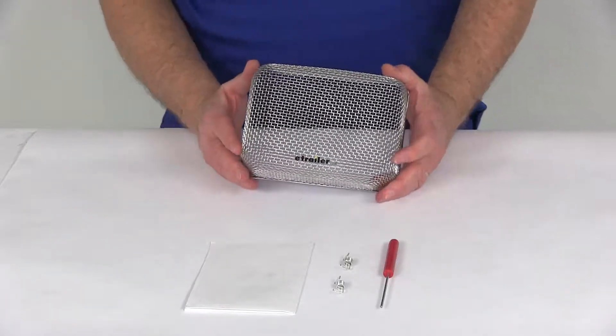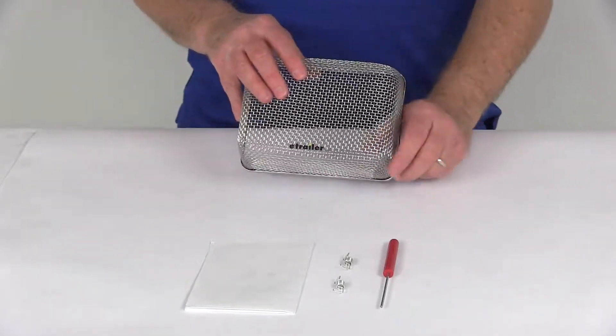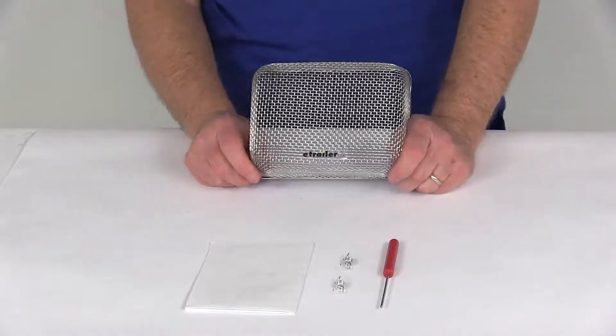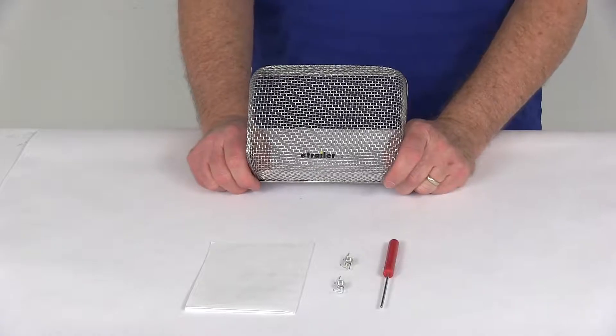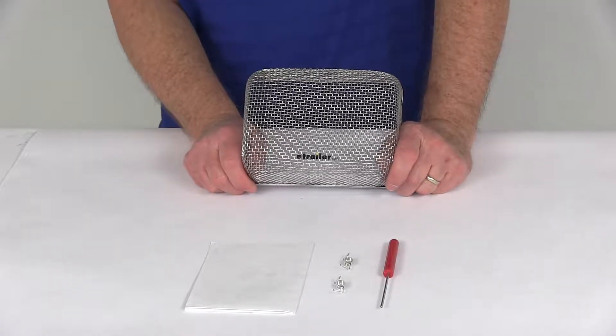Today we're going to take a look at the Valterra bug screen for the Atwood AFMD Model RV Furnace Vents. This screen is specifically designed to fit the Atwood AFMD Model Furnace Vents.